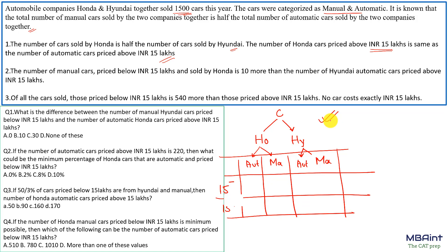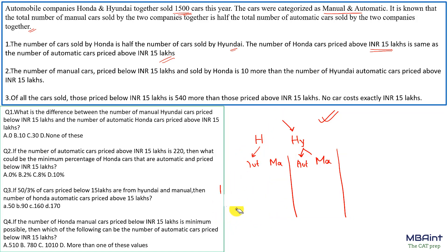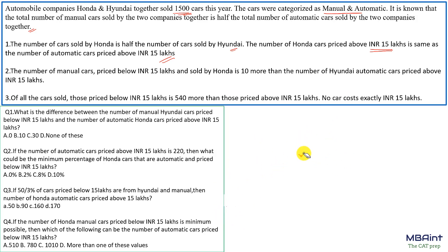The other way of solving this set is using a Venn diagram — specifically an advanced Venn diagram — because we have three different attributes, each with two subsets. I've attached the concept video for advanced Venn diagram sets. In this video, we'll solve it using the Venn diagram approach.